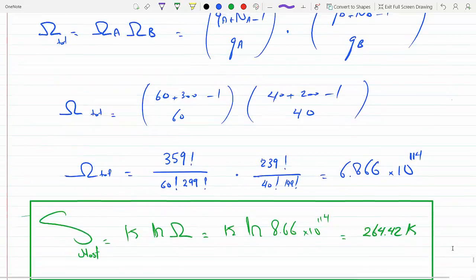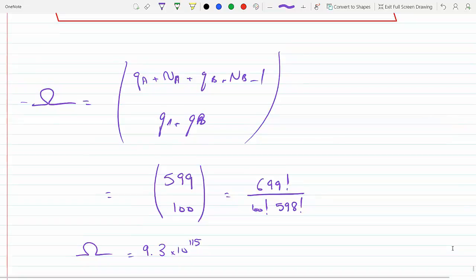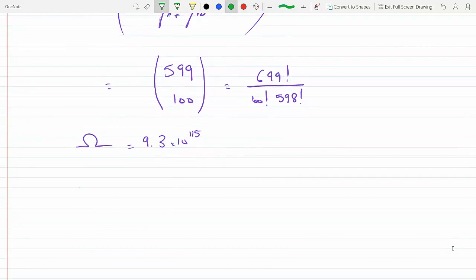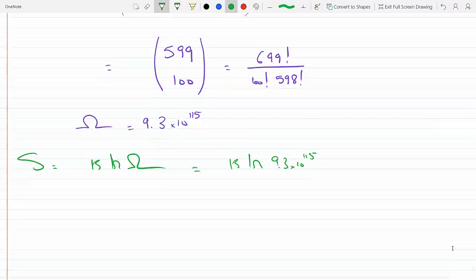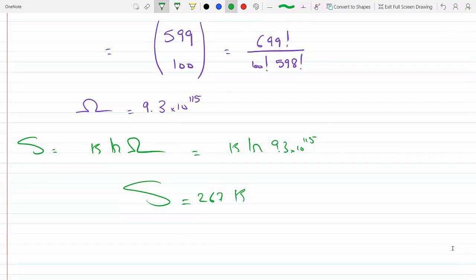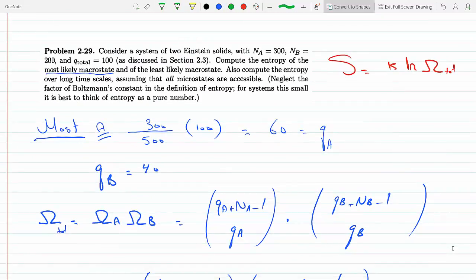And the question was compute the entropy over long time scales assuming all microstates. So S equals K ln of this, and we get 267K. Well, K is Boltzmann's constant, we'll just leave it. So this is when all the microstates are accessible.